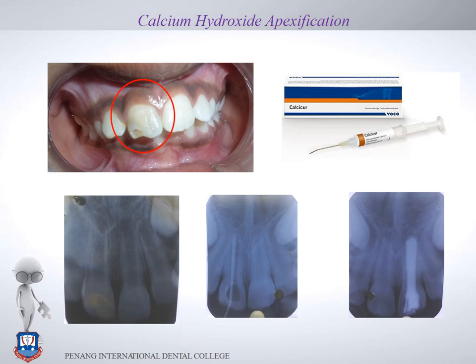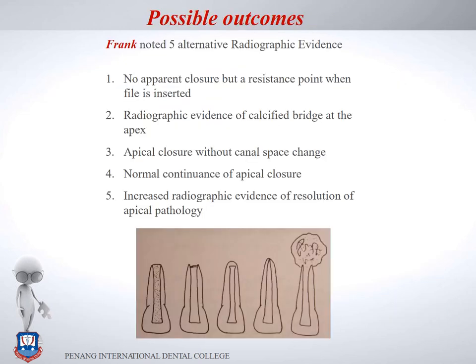Frank, who introduced apexification, described four to five outcomes: first, no apparent radiographic closure but a resistance point when the file is inserted; second, radiographic evidence of a calcific barrier at the apex; third, apical closure without canal space closure; fourth, continued normal apical closure; and fifth, increased radiographic evidence of resolution of apical pathology.